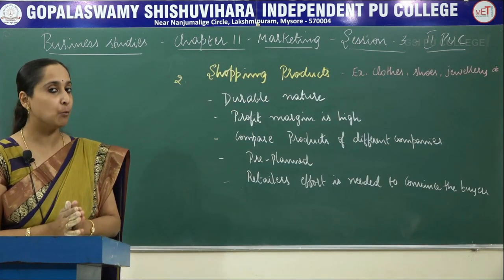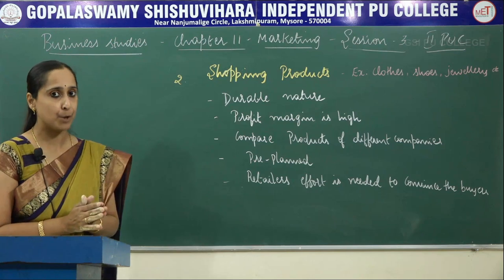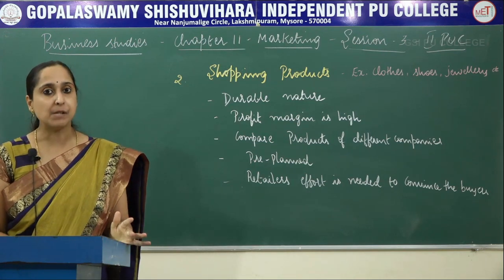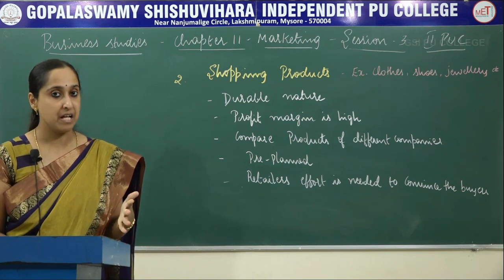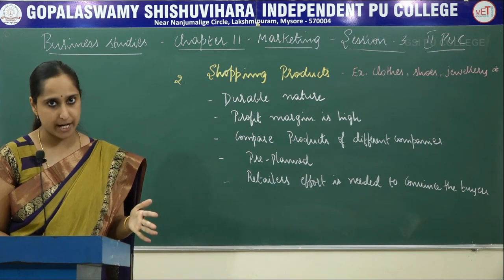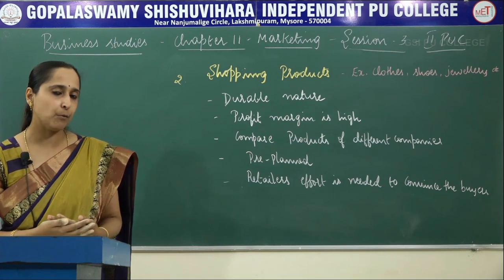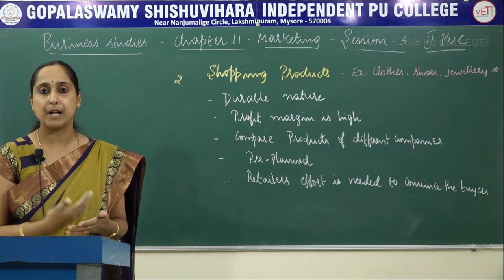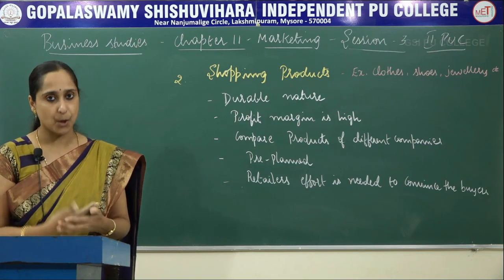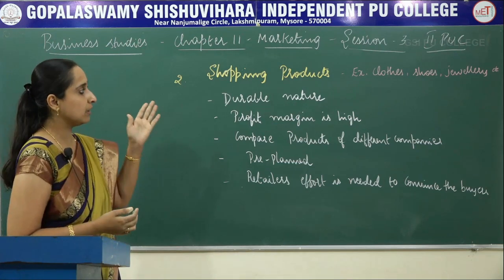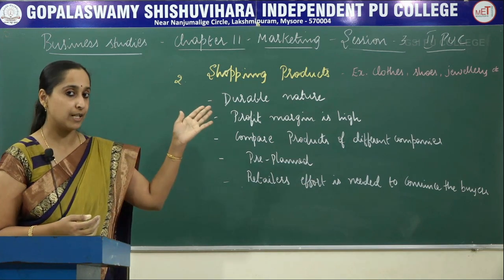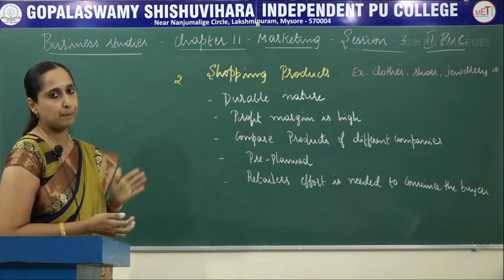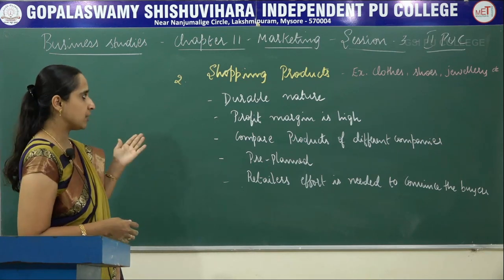On the basis of shopping efforts involved, second one is shopping products. Shopping products are products where customers spend more time in purchasing. Buyers devote considerable time comparing the quality, price, design, and colour with other products. For example, clothes, shoes, jewellery, radio, television, furniture — all these are examples of shopping products.